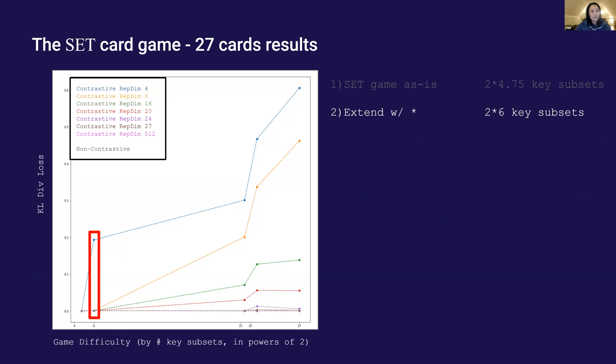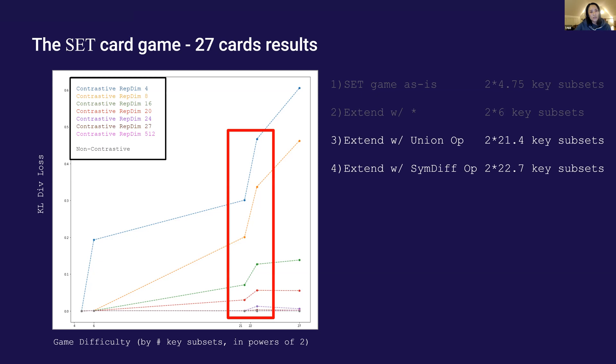The second game includes a star regular expression and requires the queries to separate 2 to the power 6 number of subsets of keys. So the contrastive model with vector dimension 4 starts to do poorly. As we introduce set union and symmetric difference operators, the models need to separate between 2 to the power 21 and 23 subsets of keys. So the contrastive models with vector dimension 8 to 20 also do worse and worse.